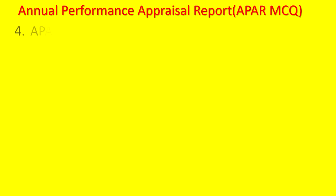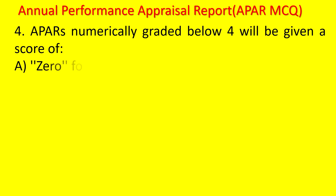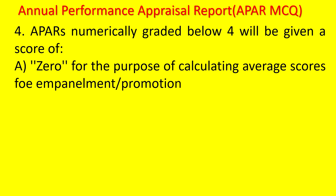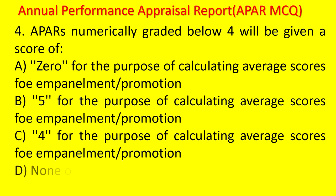MCQ: APARs numerically graded below 4 will be given a score of how much for the purpose of calculation of average scores for empanelment or promotion — 0, 5, 4, or none of these? The answer is 0. Any APAR graded less than 4 will be treated as 0.